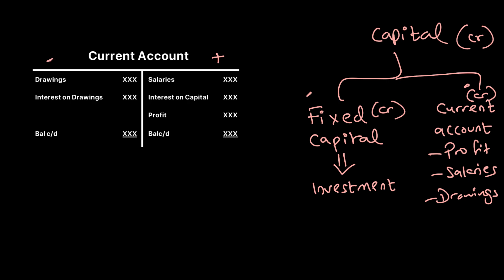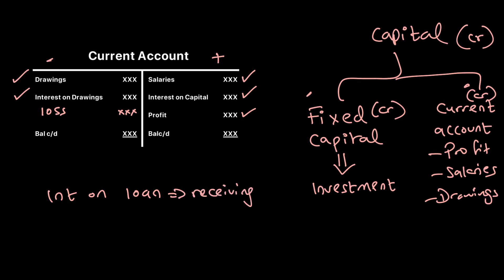Since capital is credit in nature, both the fixed capital account and the current account are credit in nature. Whatever partners receive goes on the credit side of the current account; whatever reduces their capital goes on the debit side. Salaries go to the credit side; interest on capital goes to the credit side; profit shares go to the credit side. Drawings go to the debit side, reducing capital. Interest on drawings also goes to the debit side. Interest on loan received by partners goes to the credit side.